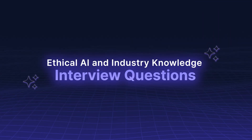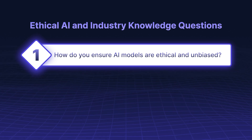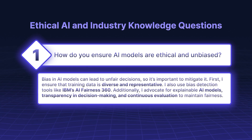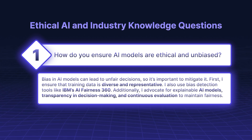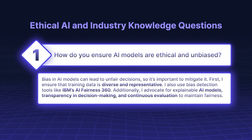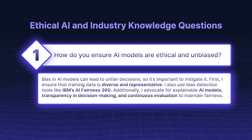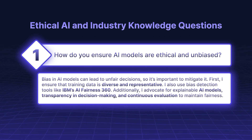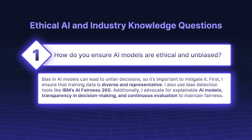Ethical AI and industry knowledge questions. How do you ensure AI models are ethical and unbiased? Bias in AI models can lead to unfair decisions, so it's important to mitigate it. First, I ensure that training data is diverse and representative. I also use bias detection tools like IBM's AI Fairness 360. Additionally, I advocate for explainable AI models, transparency in decision-making, and continuous evaluation to maintain fairness.